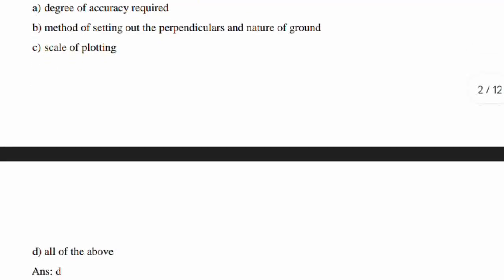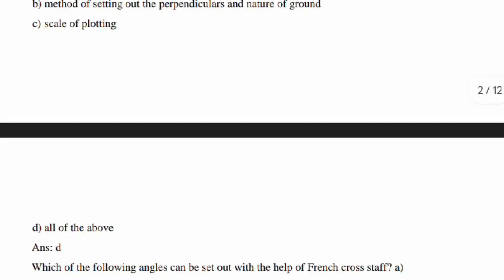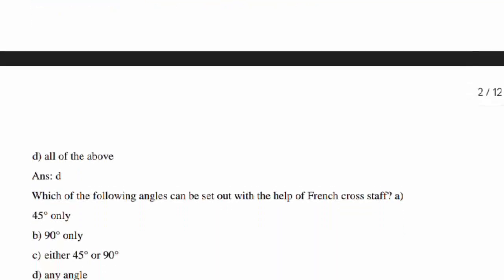The allowable length of an offset depends upon all the four: degree of accuracy required, method of setting out the perpendicular and nature of ground, and scale of plotting.